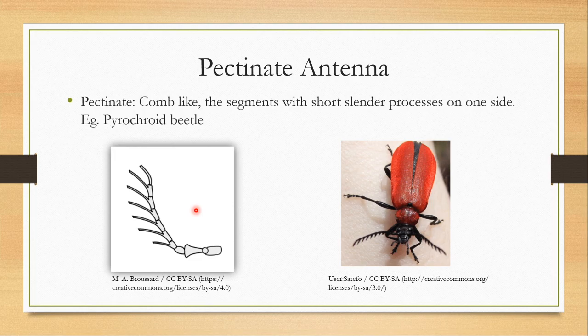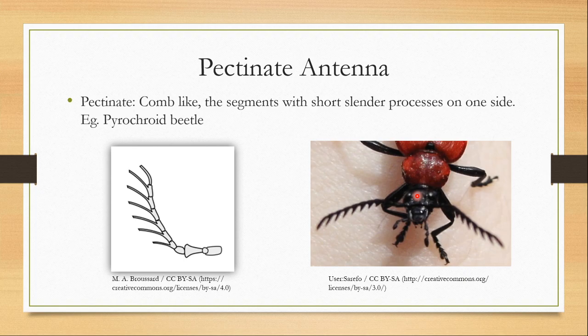Now we are going to talk about pectinate antennae — pectinate means comb-like. The segments bear short slender processes on one side. The difference from flabellate antennae is that in pectinate antennae the processes are much more slender. This is found in pyrophoric beetles or fire-colored beetles. You can see that the antennae looks like a comb.